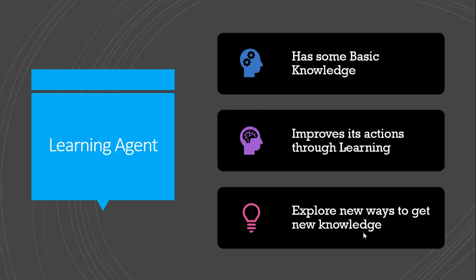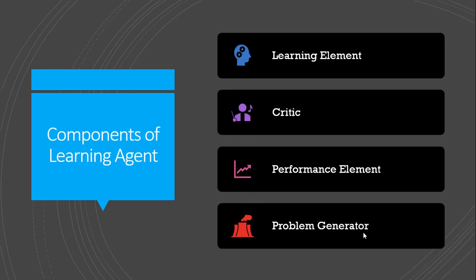Now let's discuss the four main components of the learning agent that help it to take the appropriate actions. The first one is the learning element. As the name indicates, it will help learning agent to learn new things to improve its actions.